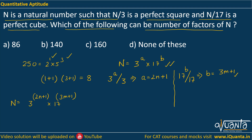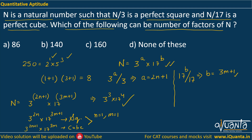So the basic prime factorization of n is 3^(2n+1) × 17^(3m+1). If you divide n by 3 you get 3^(2n) × 17^(3m+1), which should be a perfect square. When we divide by 17 we get 3^(2n+1) × 17^(3m), which should be a perfect cube. For example, putting n = 1, m = 1 gives n = 3³ × 17⁴. The number of factors of n can be written as (2n+2)(3m+2).